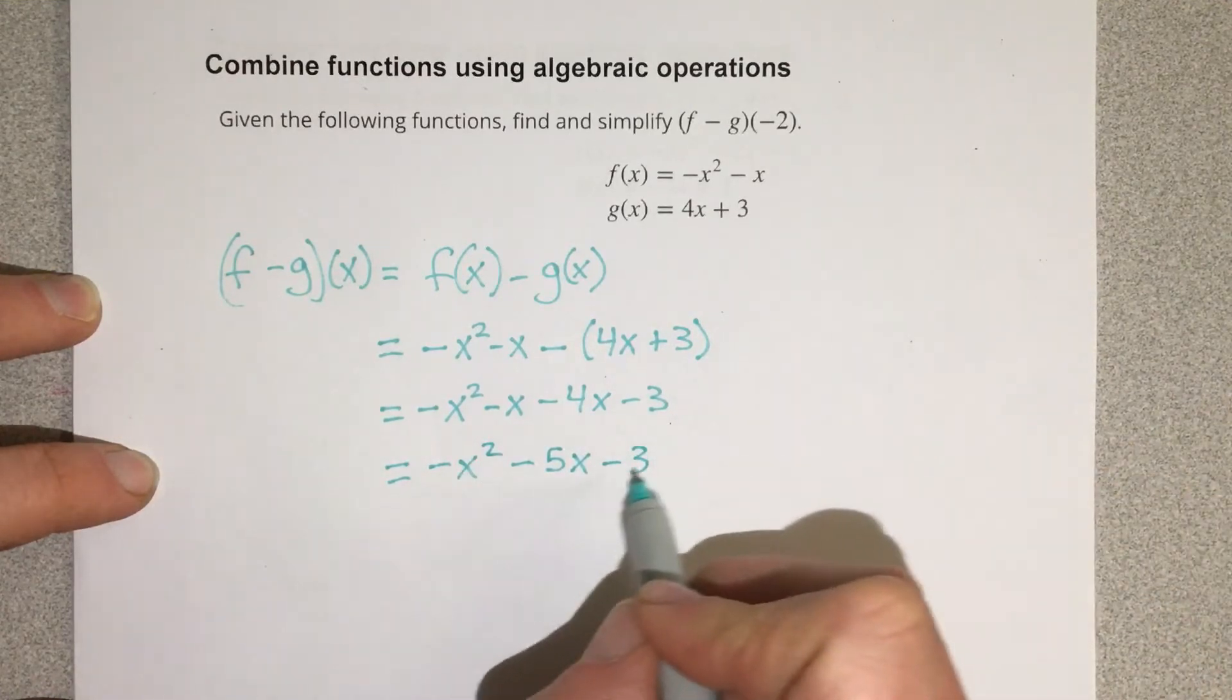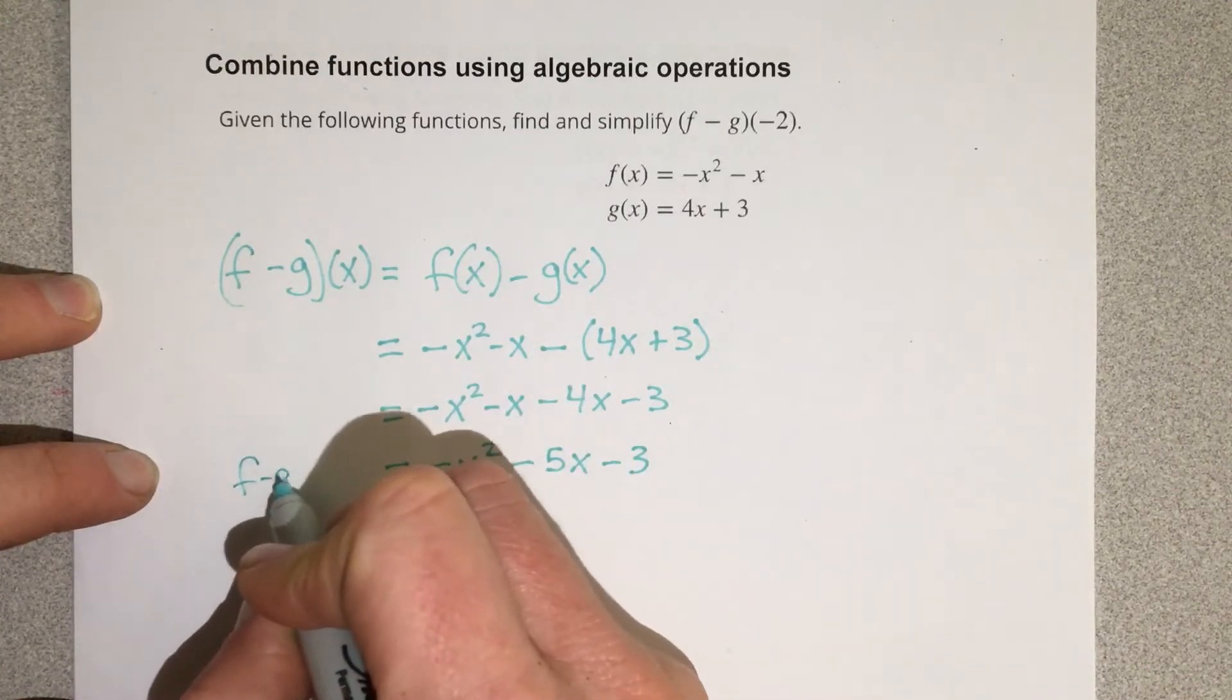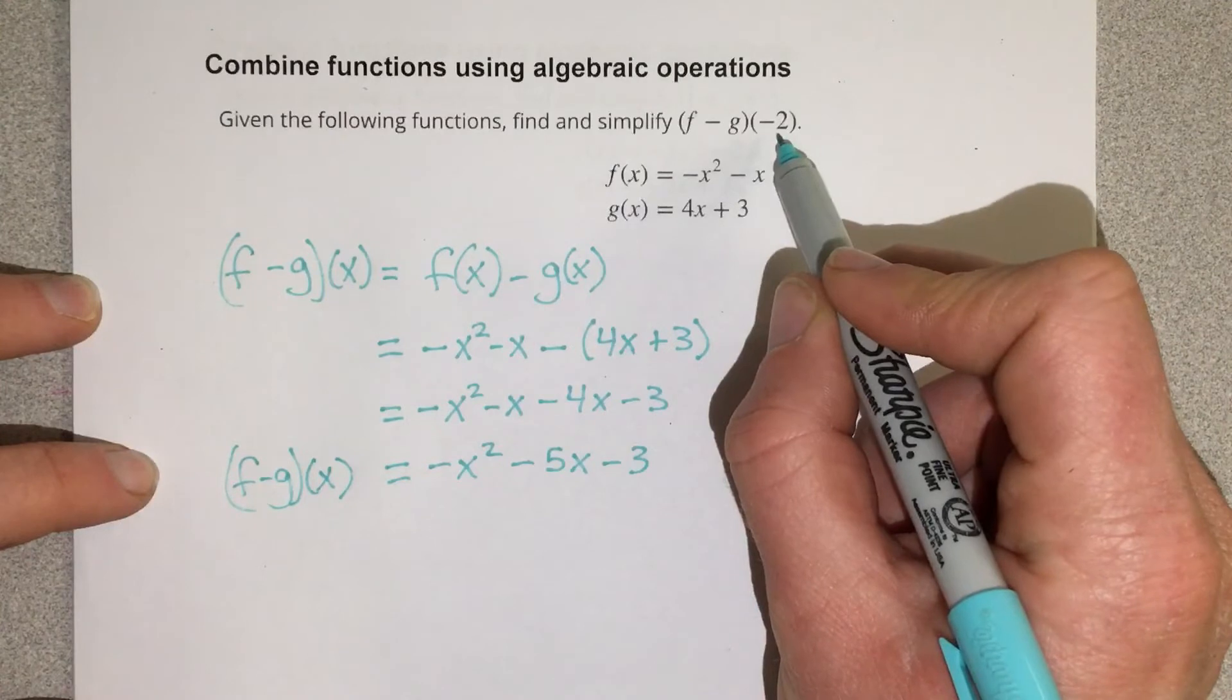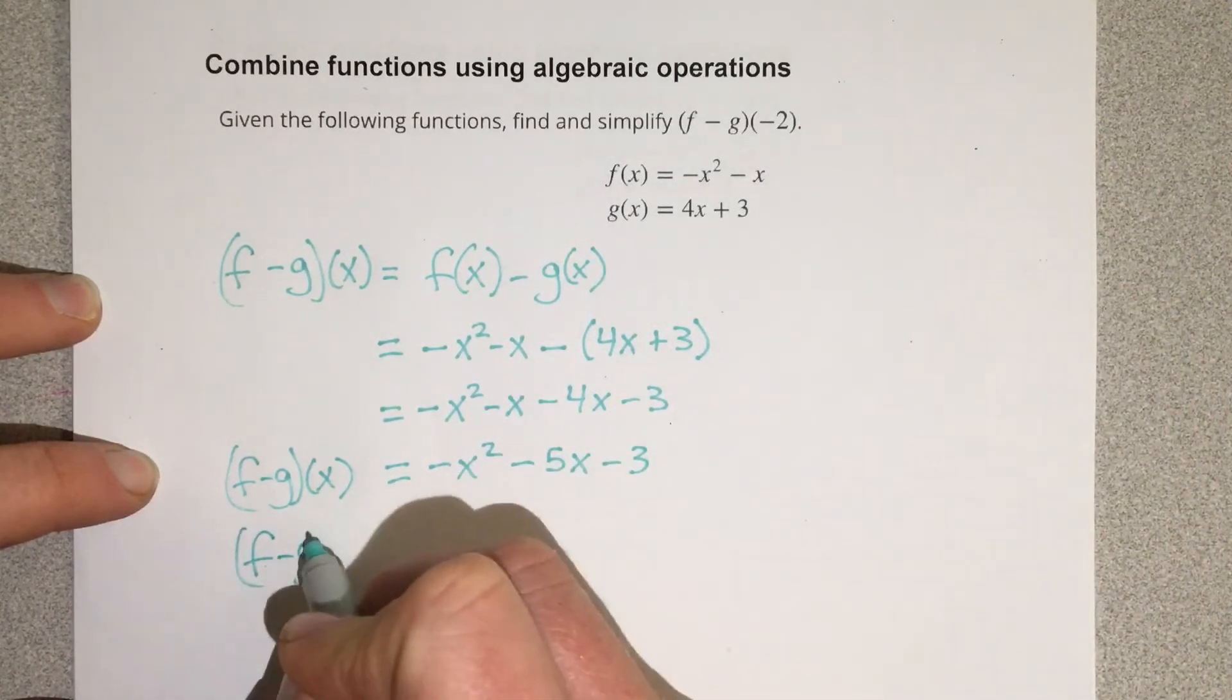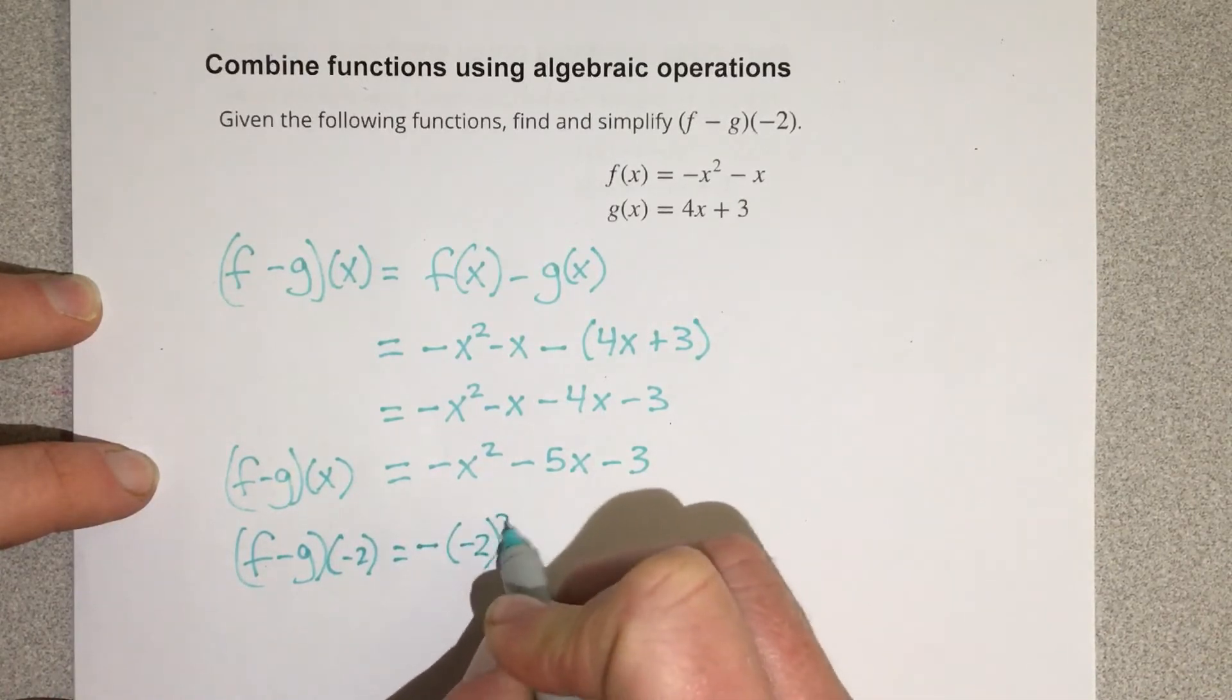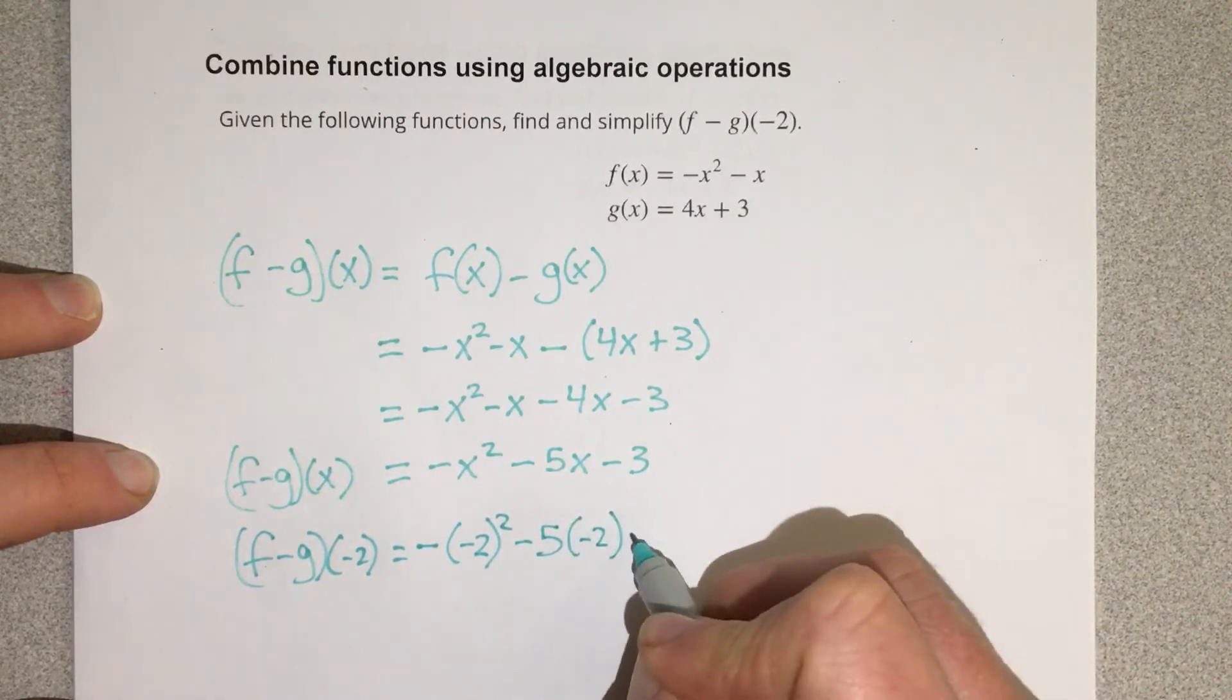This is the general equation for what f minus g of x is equal to. But they're asking the problem for this negative 2 as an input. So we're going to now input that. So we say f minus g of negative 2 is equal to negative negative 2 squared minus 5 times negative 2 minus 3.